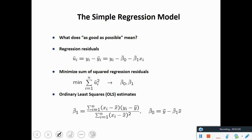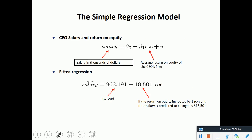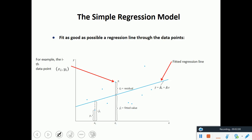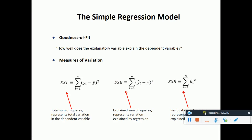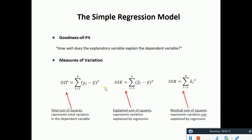We also talked about the sum of square total, which is the deviation of yi minus y-bar squared, and the sum of square explained, which is y-hat minus y-bar. What does y-hat denote? It's the predicted value, and y-bar is the average value.